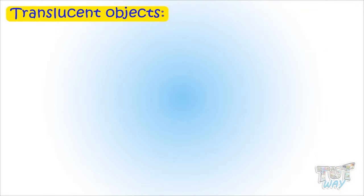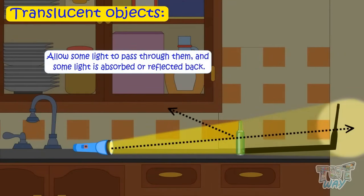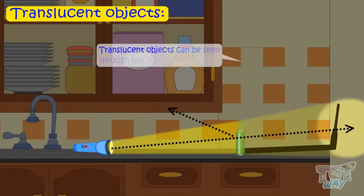Translucent objects. Translucent objects allow some light to pass through them, but not all light. Some light is absorbed or reflected. It can be seen through, but not completely.